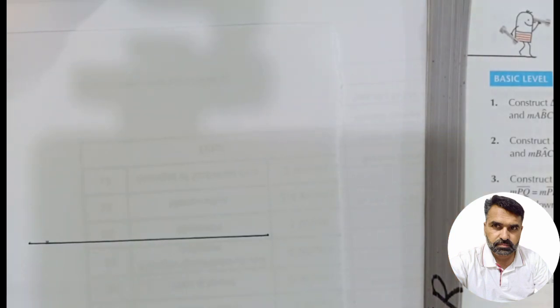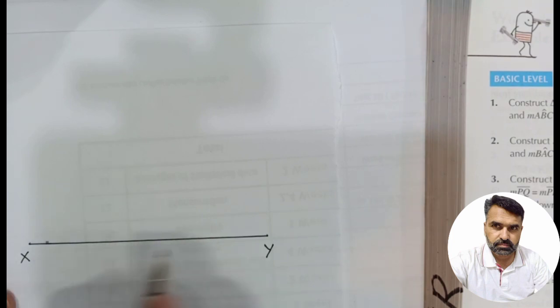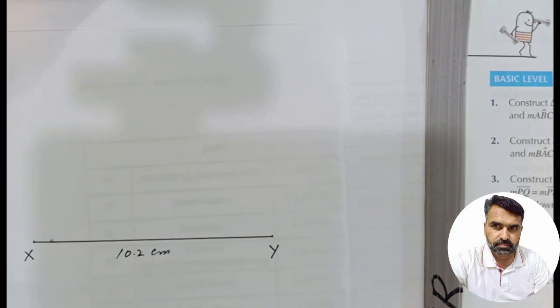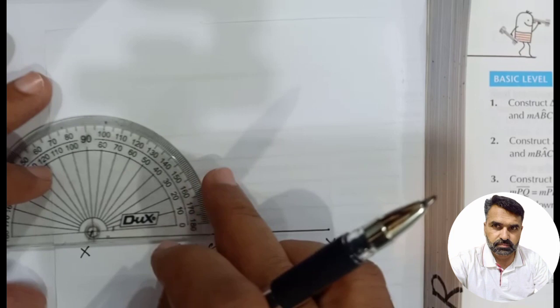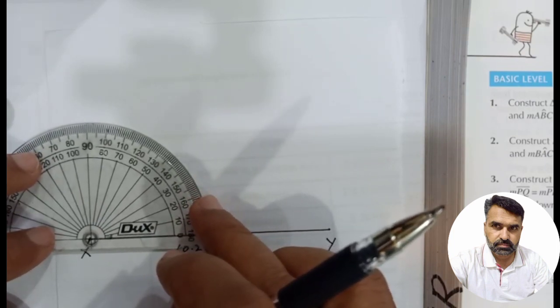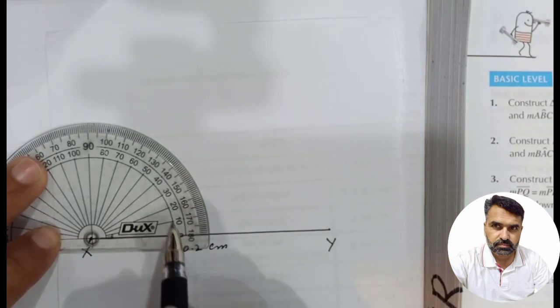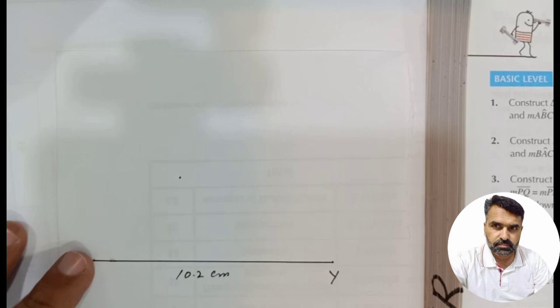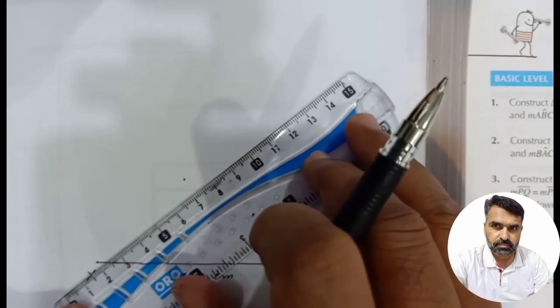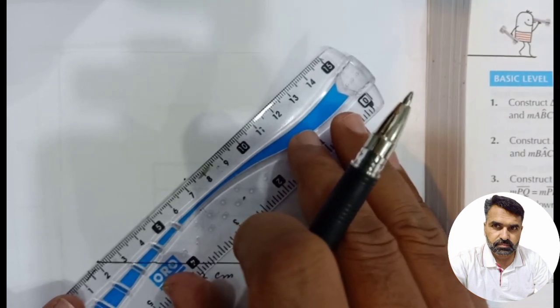Students, we have made a line. At point X we need to make a 45 degree angle. Using the protractor, from X we make a 45 degree angle. We keep the baseline and the 0 line at X, go to 45, and produce this arm of the angle.